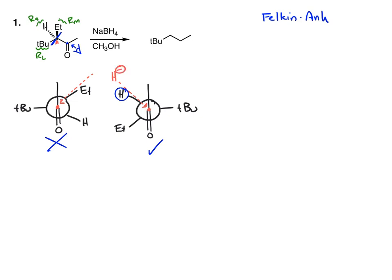Our nucleophile here is a hydride. Let's add that and draw the resulting Newman projection. I'm going to keep the back carbon the same. Then the front carbon — we stagger these groups: the carbonyl becomes an OH, we have the hydride that added, and the methyl group. Next I need to get the groups in the plane in the right orientation. In my zigzag structure I want: tert-butyl, the two carbons of the Newman projection, and the methyl.